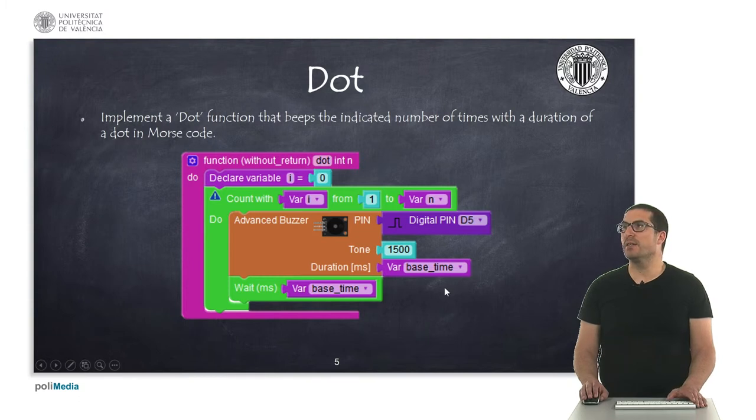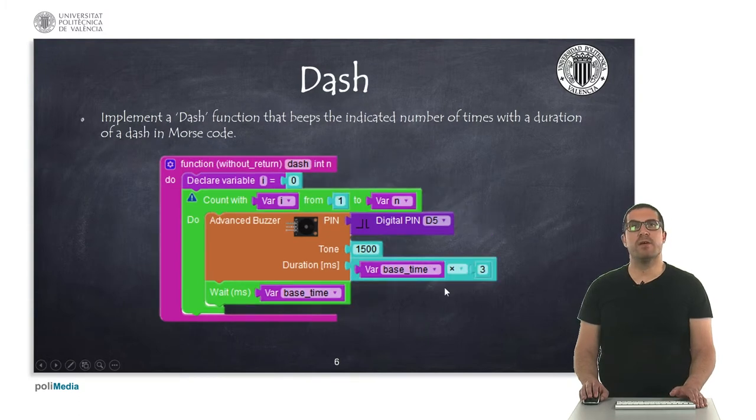This is the second function or procedure actually that will be used for our SOS example, in which we are implementing the dash function. It's exactly the same as the dot function, but here the length of the duration is three times higher as you can see here.